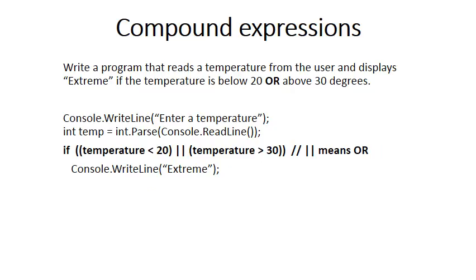The other operator we need is 'or'. The question now reads: write a program that reads a temperature and displays 'extreme' if the temperature is below 20 or above 30. Instead of &&, notice we use two vertical bars — || — normally found on the top right of your keyboard. So this if statement says: if the temperature is less than 20 or the temperature is greater than 30, write line 'extreme'.